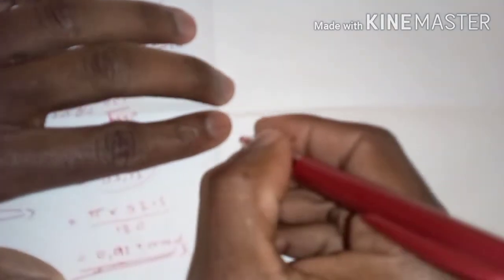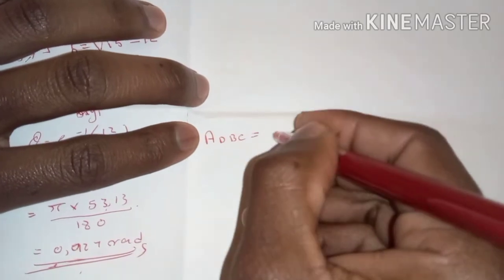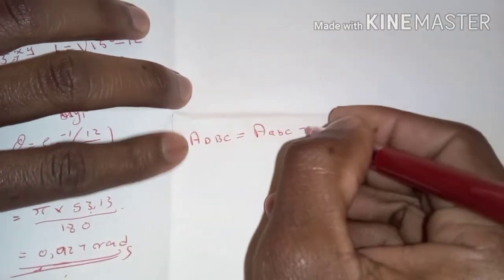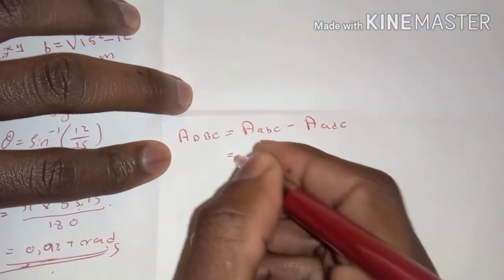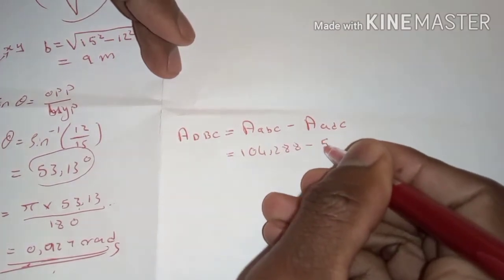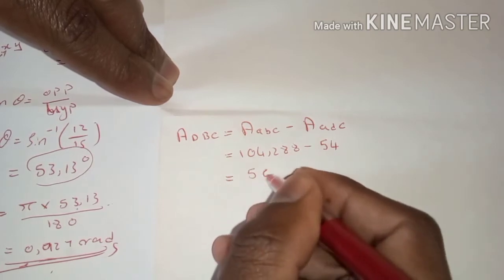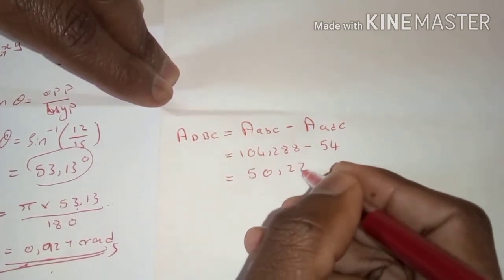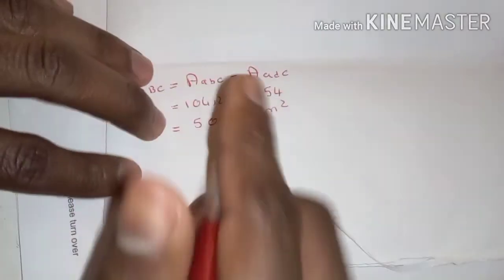The area of DBC, which is the area we are looking for, equals the area of ABC minus the area of ADC: 104.288 − 54 = 50.288 m².